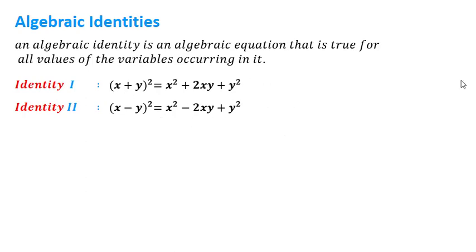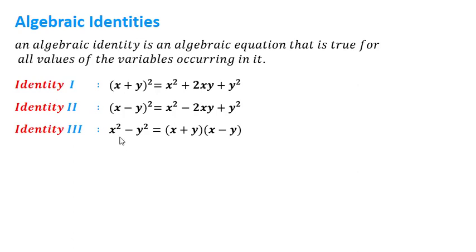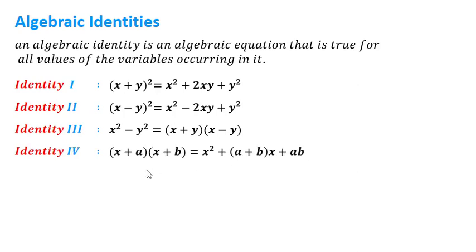The third identity is x² − y² = (x + y)(x − y). The fourth identity is (x + a)(x + b) = x² + (a + b)x + ab.